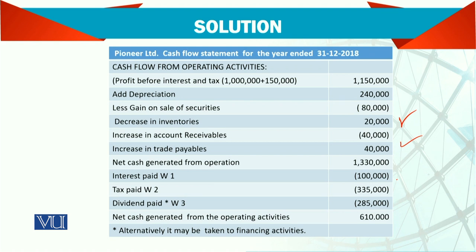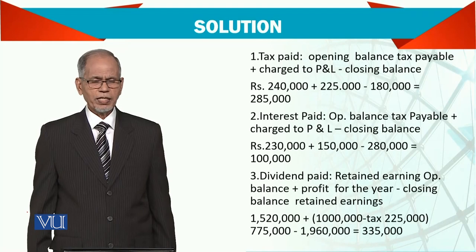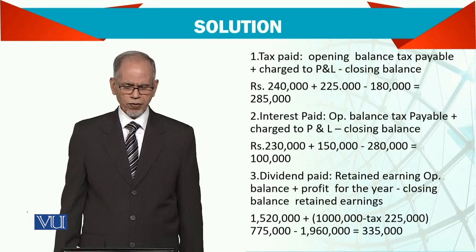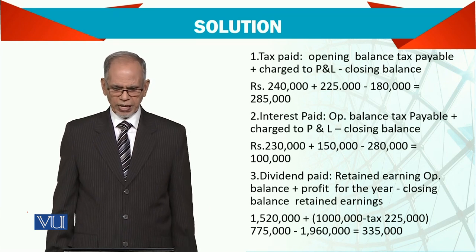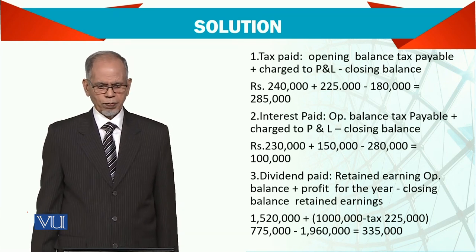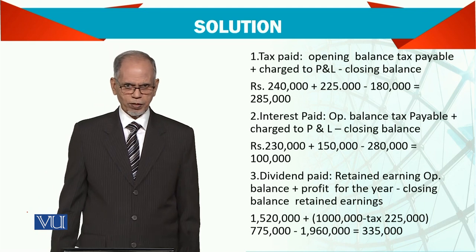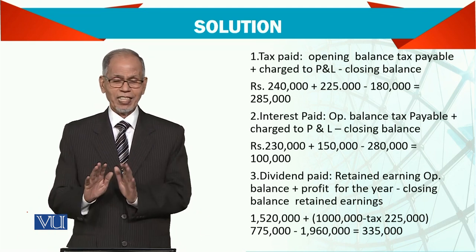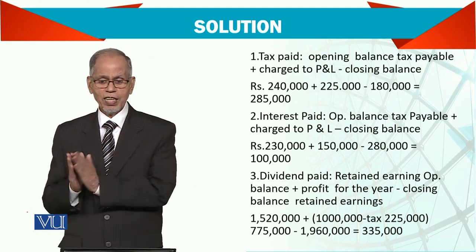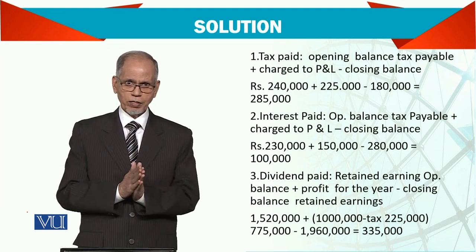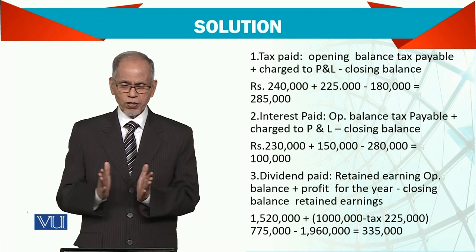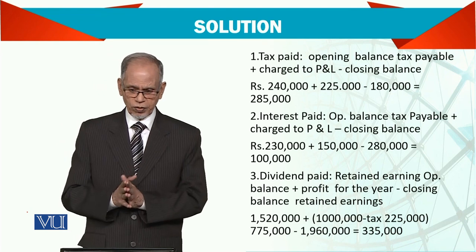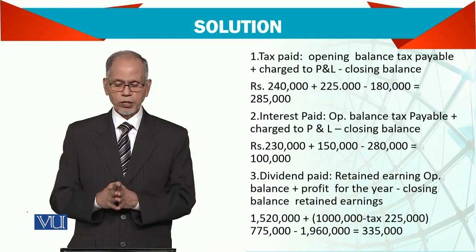So far as dividend paid is concerned, it may alternatively be taken to the financing section of the financial statement — otherwise the rest is here. Let's see how those tax paid figures are worked out. Opening balance of tax payable plus charge to profit and loss account — we have given clearly that this is the opening balance and this is the charge to the profit and loss account. So the difference gives you the tax paid.